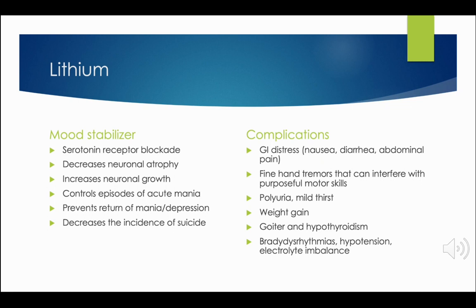Polyuria or mild thirst can occur. A potassium-sparing diuretic such as spironolactone can help manage this. We also want the individual to have enough fluid intake — two to three liters of fluid per day from beverages or food. Weight gain is a common problem, so the individual needs to have a healthy diet and exercise. We want to measure the client's BUN, because renal toxicity can be an issue with this medication. Have a baseline BUN and creatinine and monitor kidney function periodically. We also obtain the client's baseline T3, T4, and TSH levels prior to starting treatment and then annually, because goiter and hypothyroidism can be a problem with long-term lithium use.